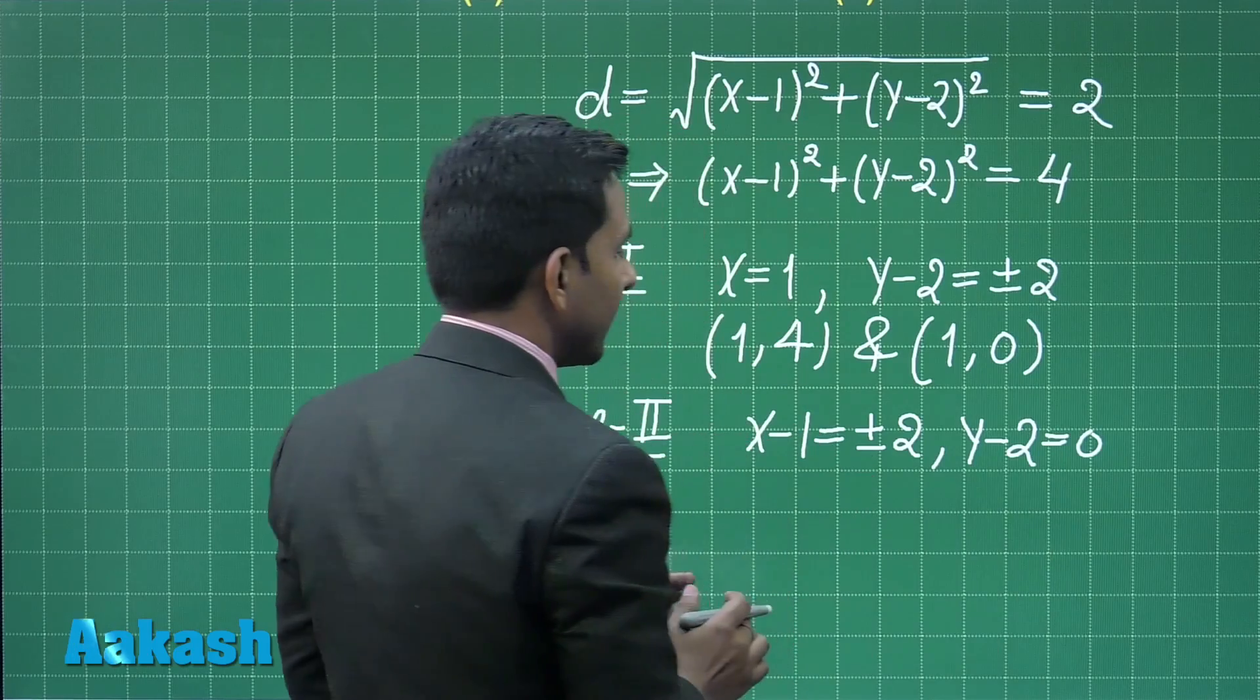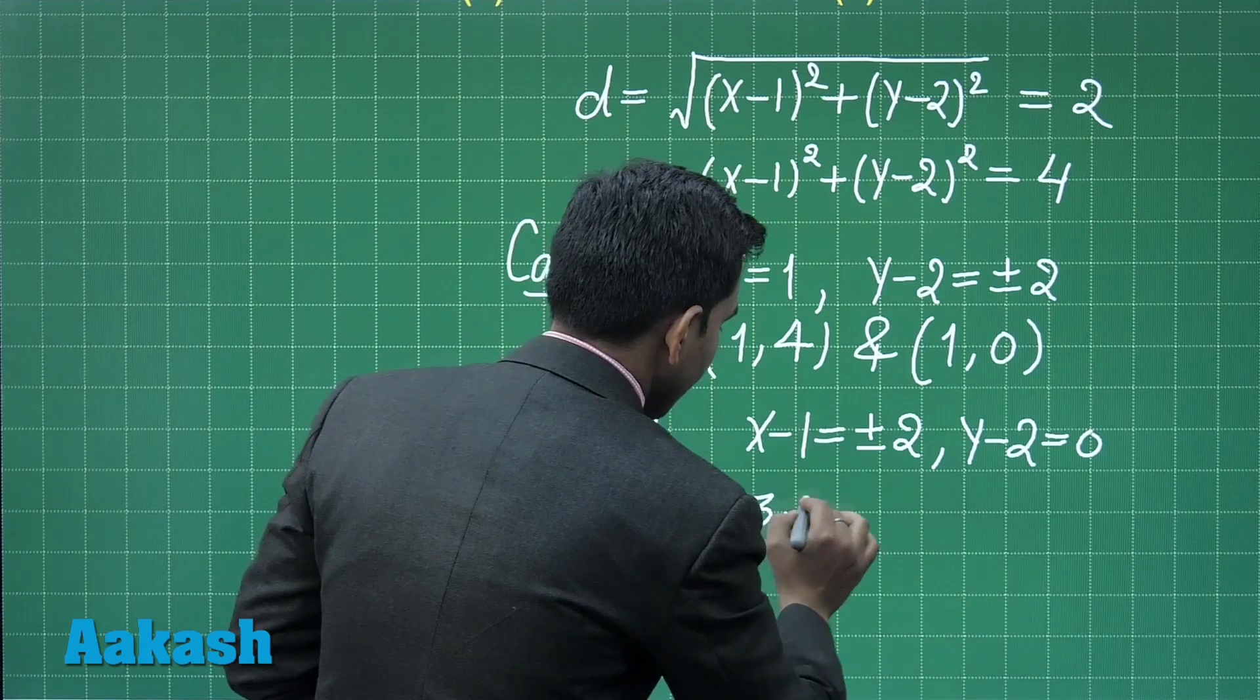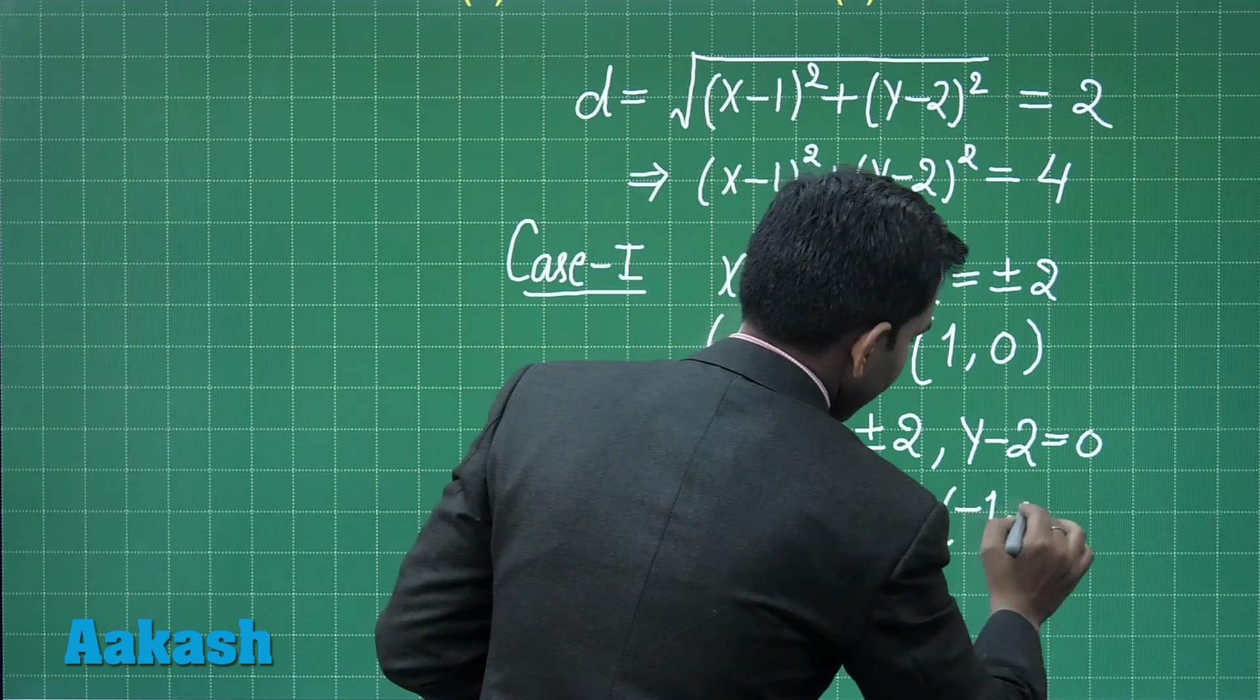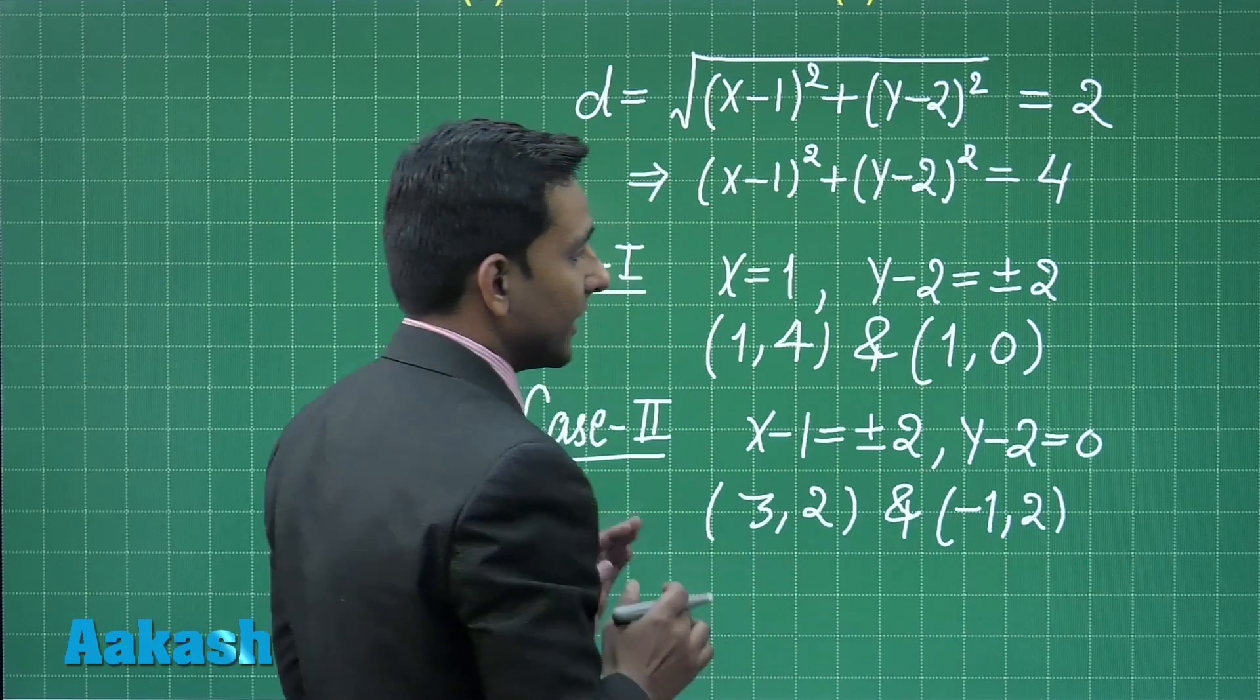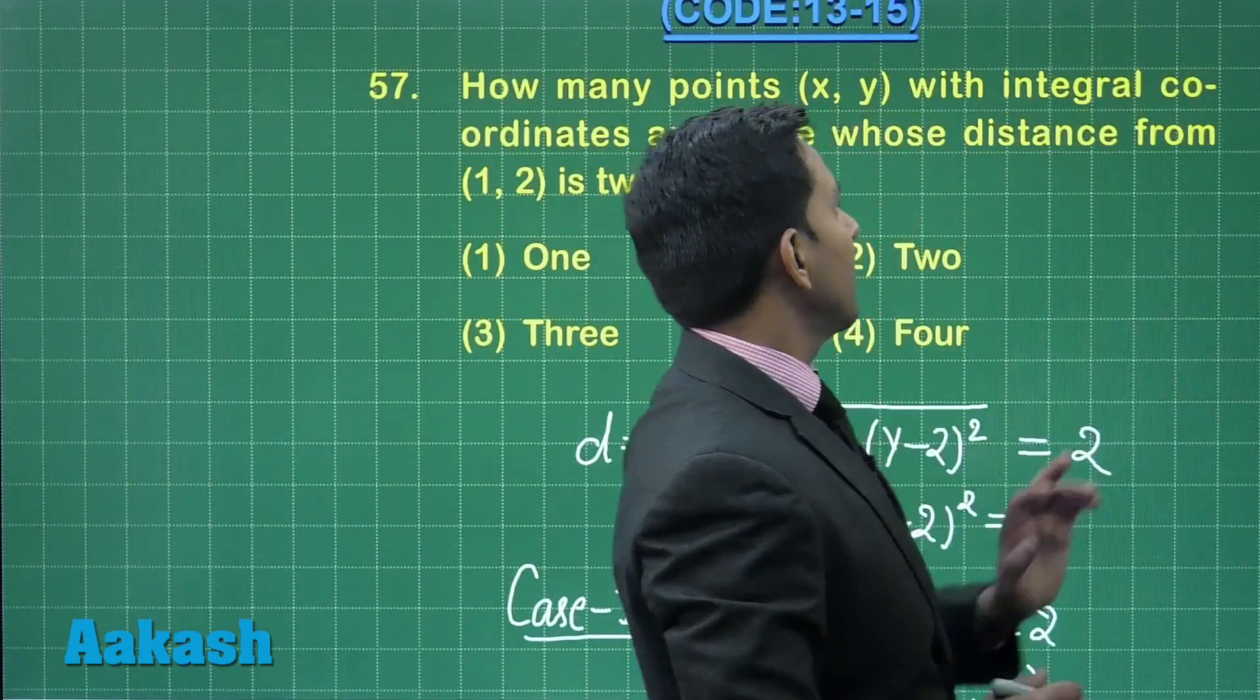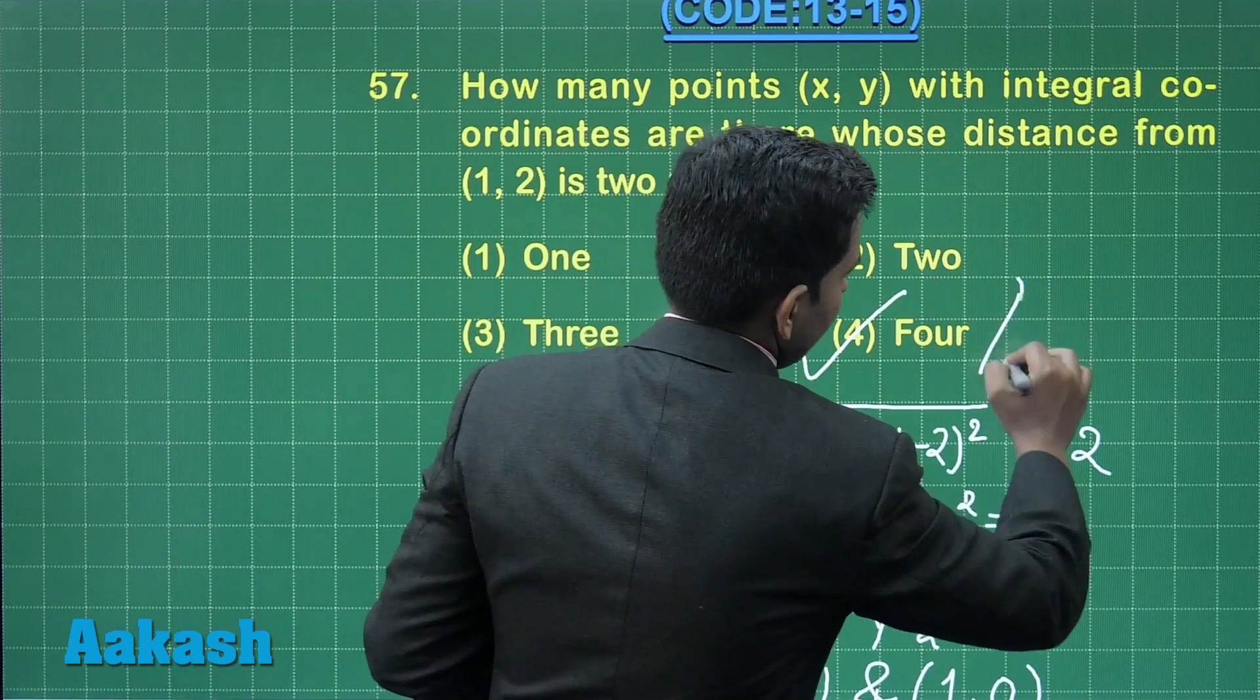We get two more coordinates: (3, 2) and (-1, 2). So we have 2 more coordinates, giving us a total of 4 points. Therefore, option 4 is the correct answer for this question.